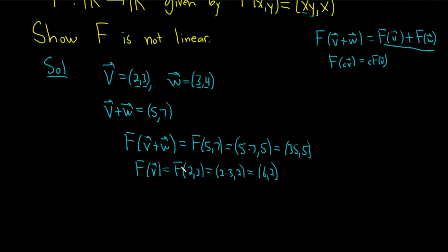And then F of w, f of w is F of 3, 4. So that'll be 3 times 4, 3. So that'll be 12, 3.